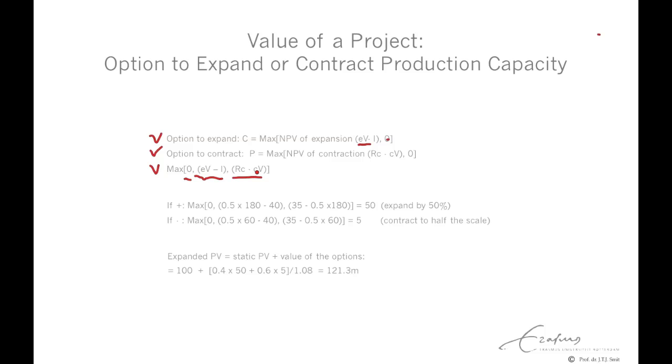Let's fill in the numbers, and we fill in the same numbers as in the numerical examples of our previous webcast. If the value increases, we have the maximum of nothing, or expanding with 50%, so that's 0.5 times 180, minus the investment of expansion, that's 40. This is a total of 90 minus 40, is 50.